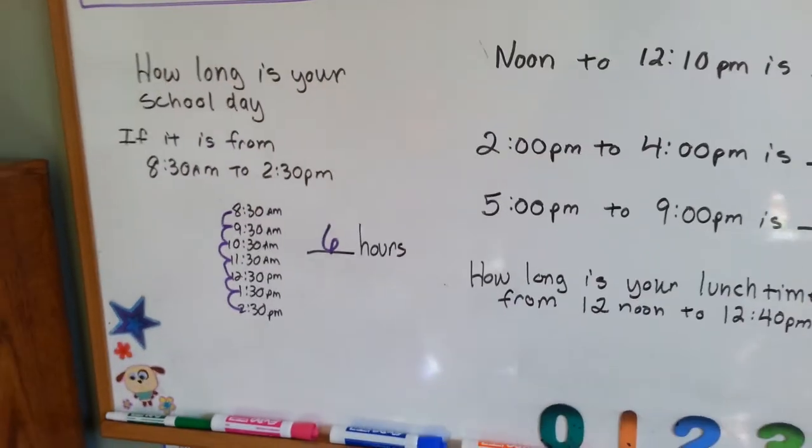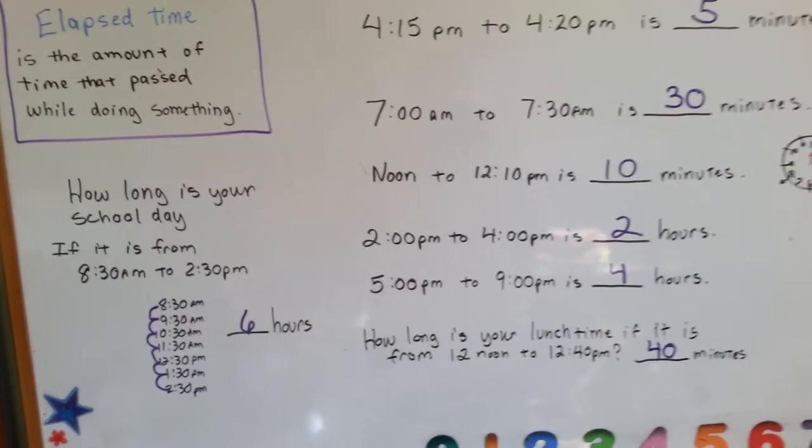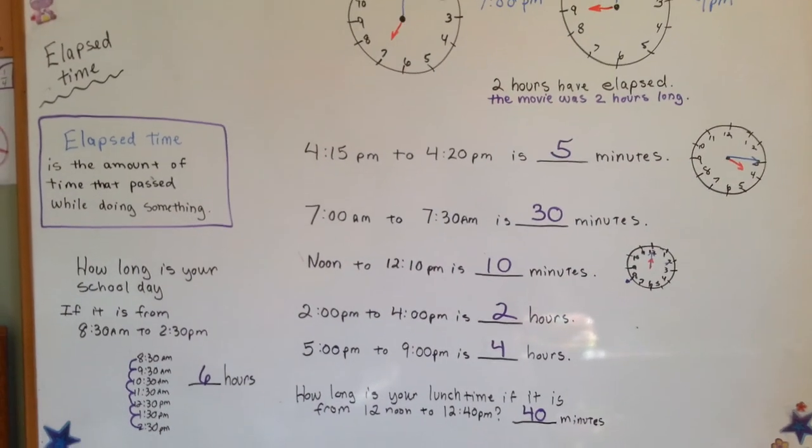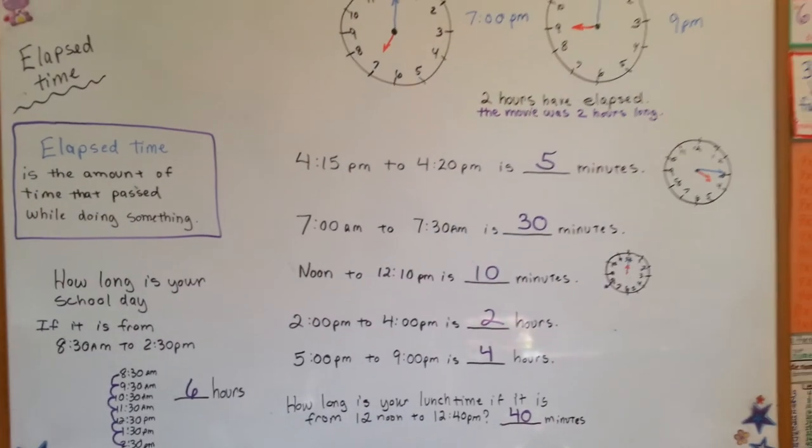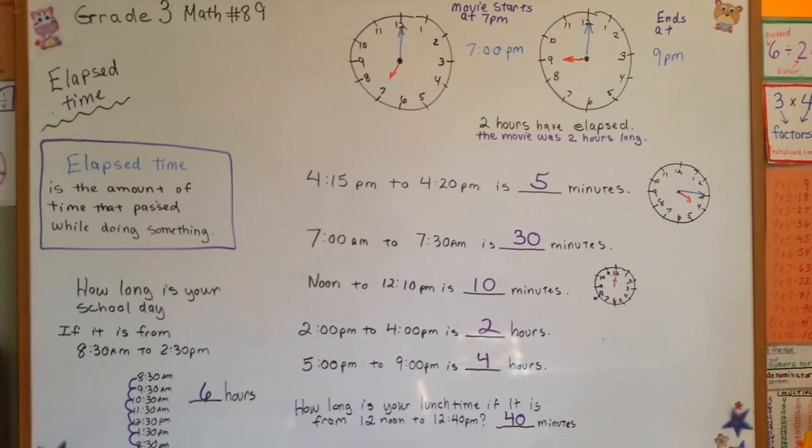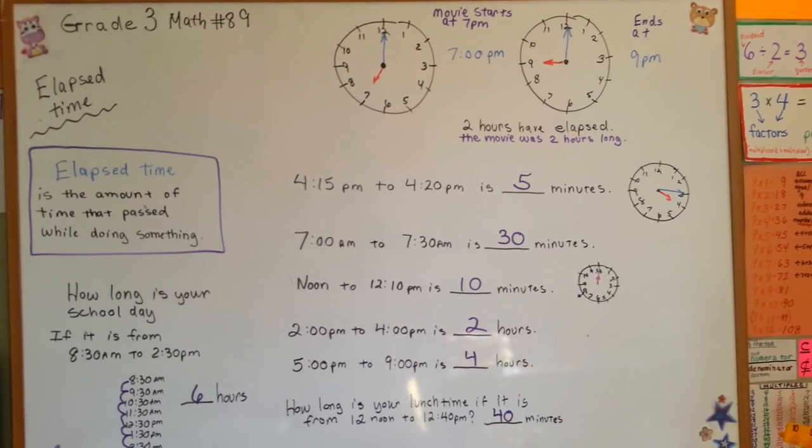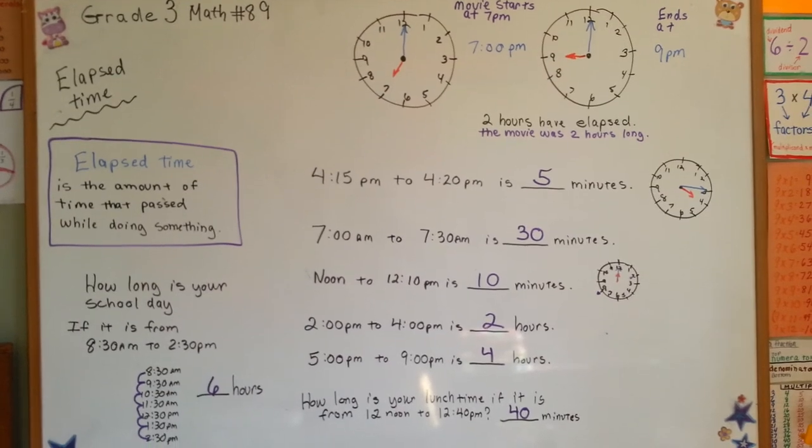So time elapsed is how much time that went by. How much time you used on the clock doing whatever you were doing. Good job. See you next video.